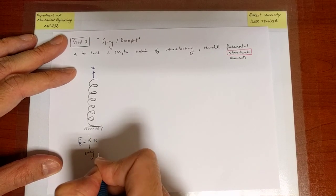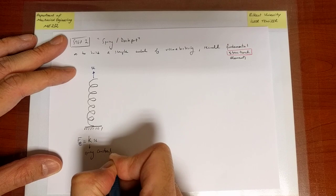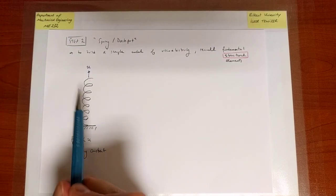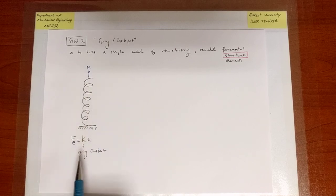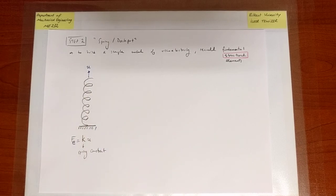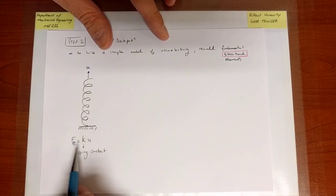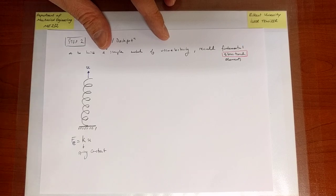K here is our spring constant. The spring constant is just like — if this were a solid beam — a constant that depends on the length, the elastic modulus, and the cross-sectional area. Ultimately, only the Young's modulus is a material property; everything else is a structural property. Therefore the spring constant is a structural constant influenced by a number of things.